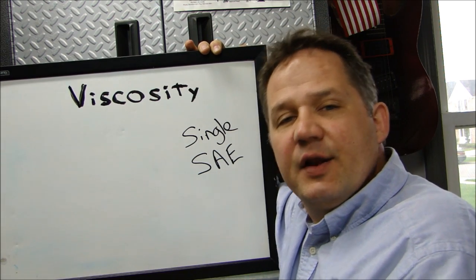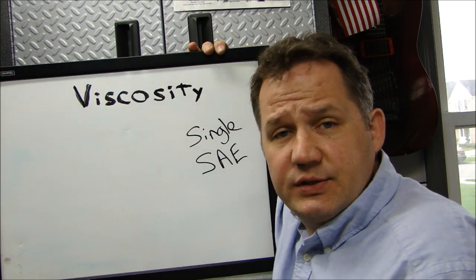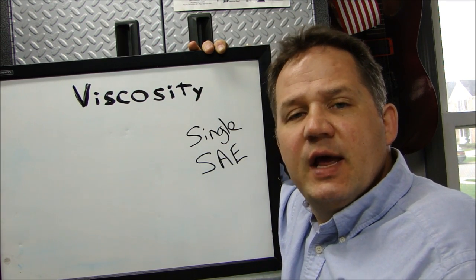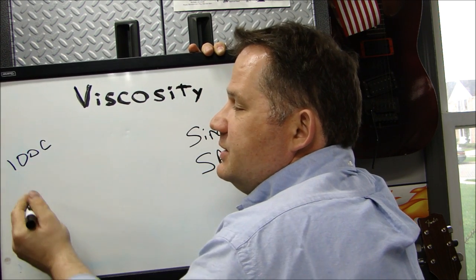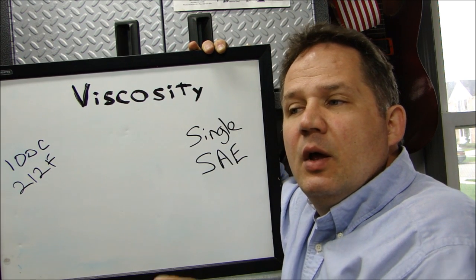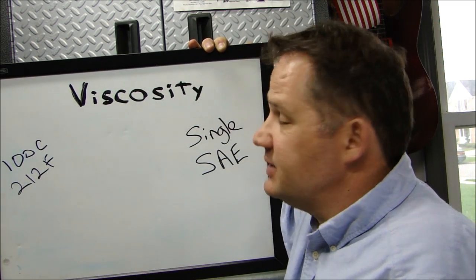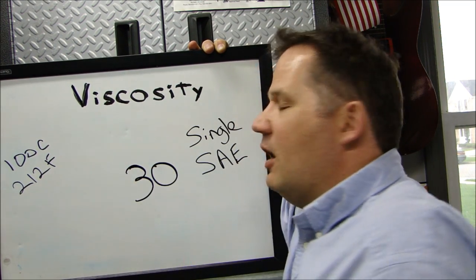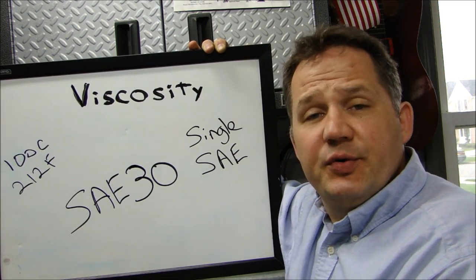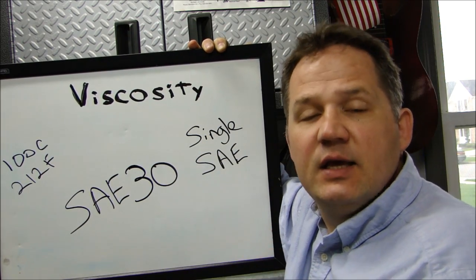Crude oil is pulled out of the ground and run through a refinery. After refining, it's tested to see what the viscosity is. Oil viscosity is measured at 100 degrees Celsius, which is 212 degrees Fahrenheit. How the oil flows at that temperature determines its weight or viscosity. If it comes out to be a 30, it'll be considered an SAE 30 oil — meaning at 100 degrees Celsius it has a weight of 30. That's straight 30 weight oil: a single SAE, single viscosity oil.